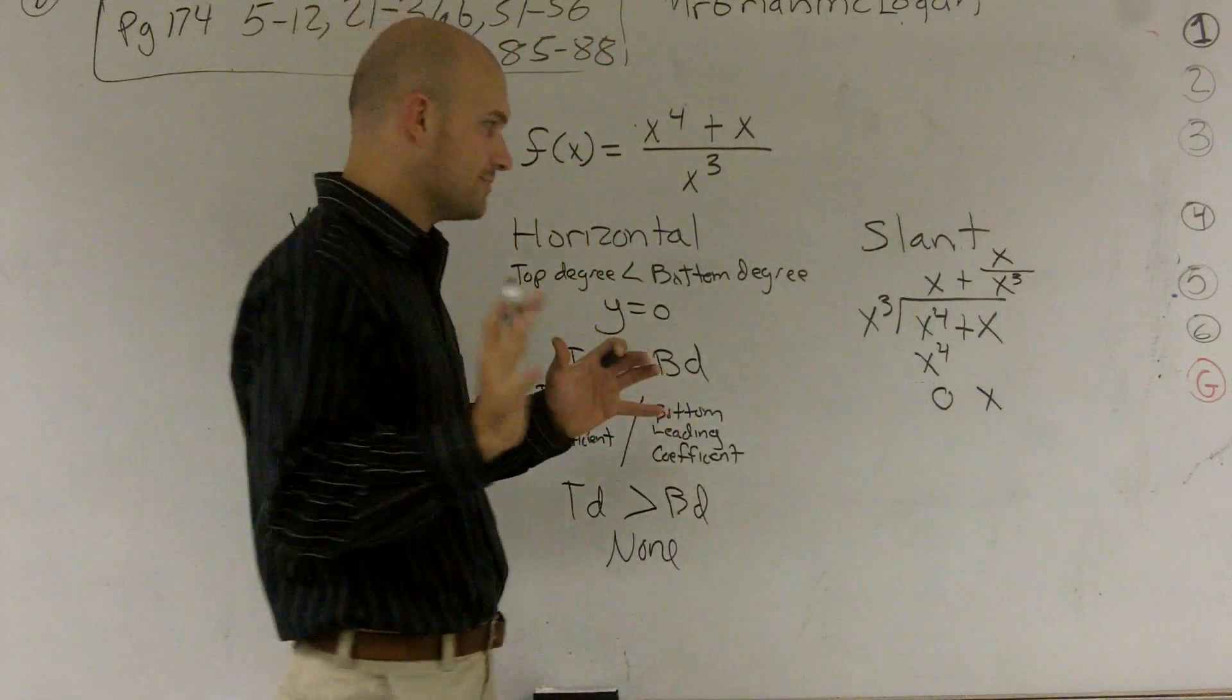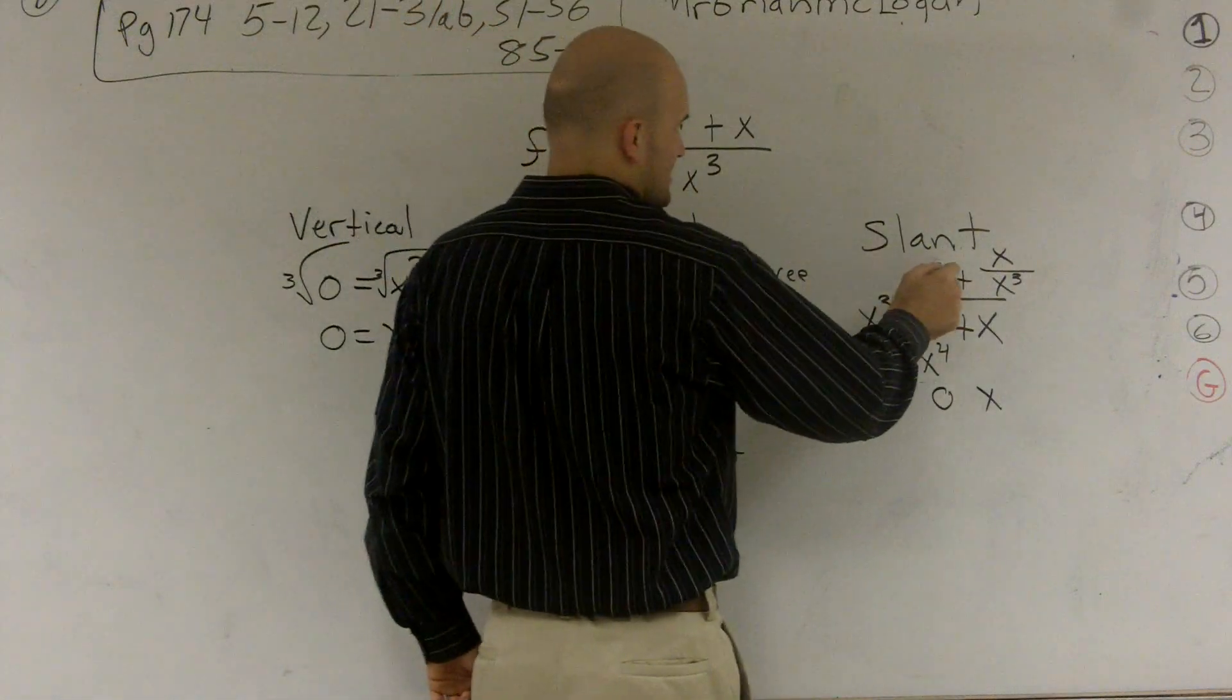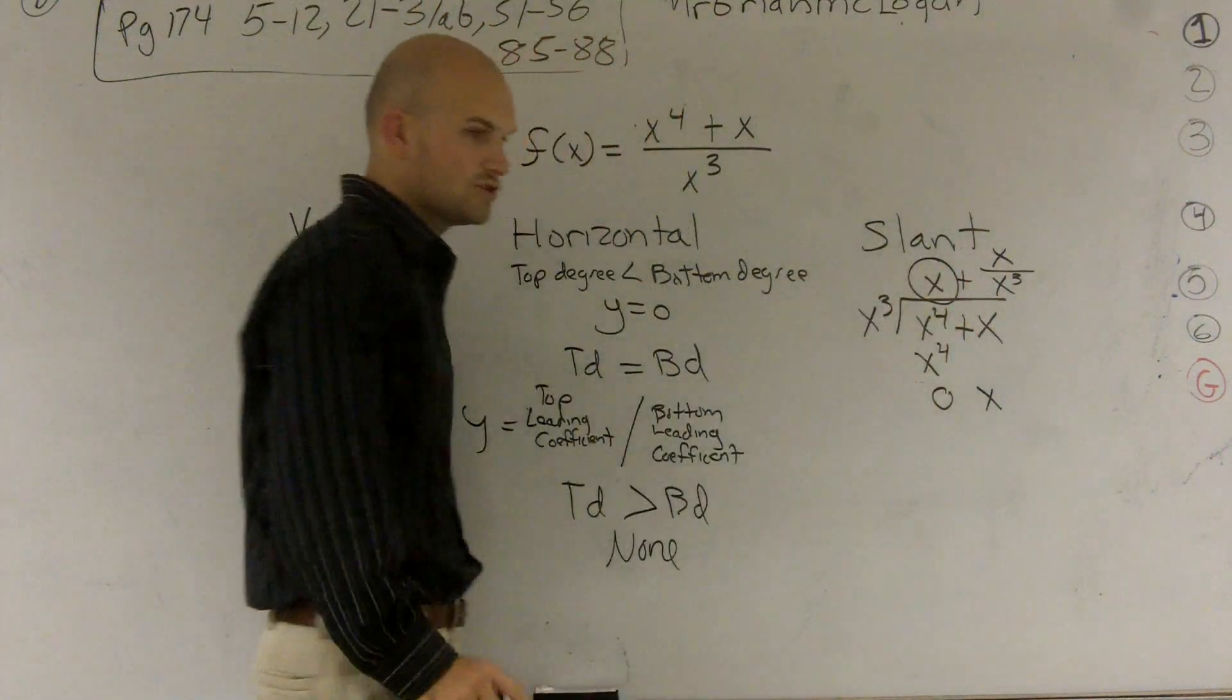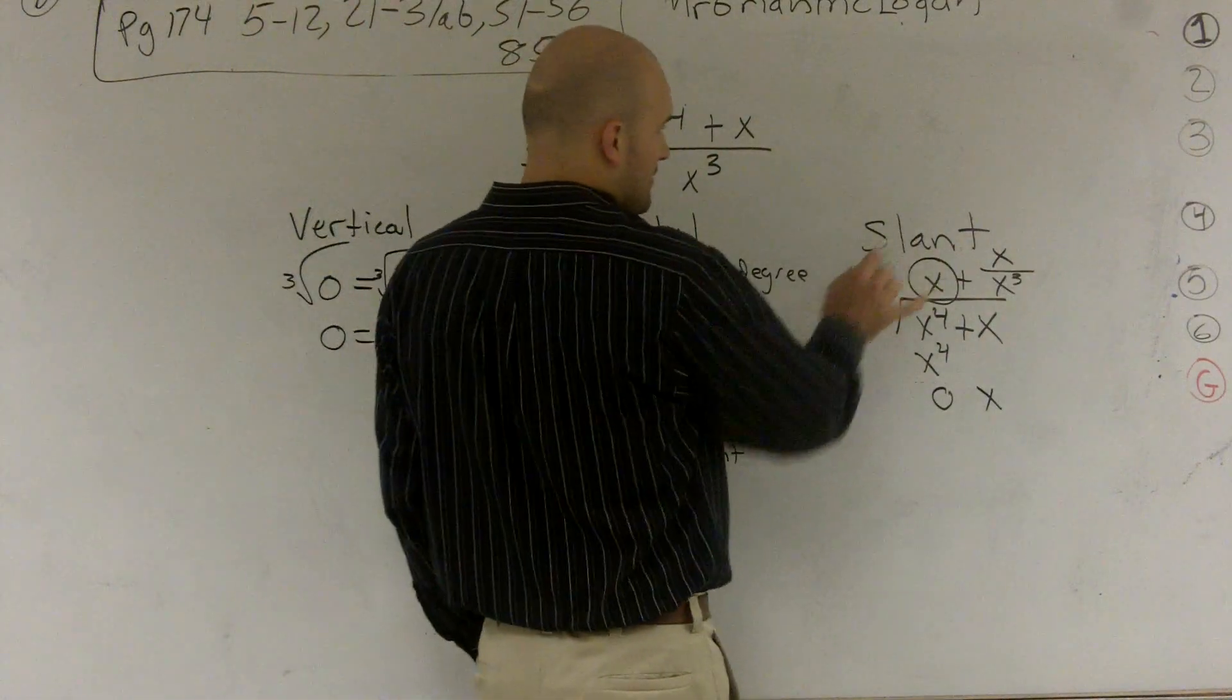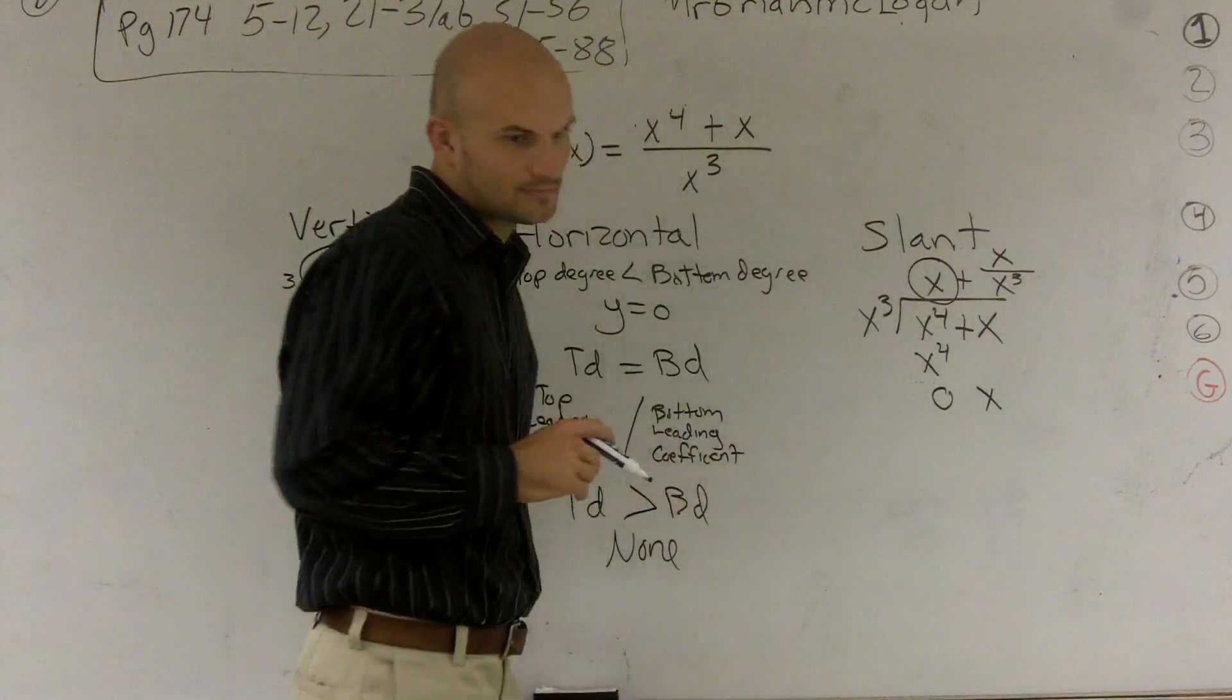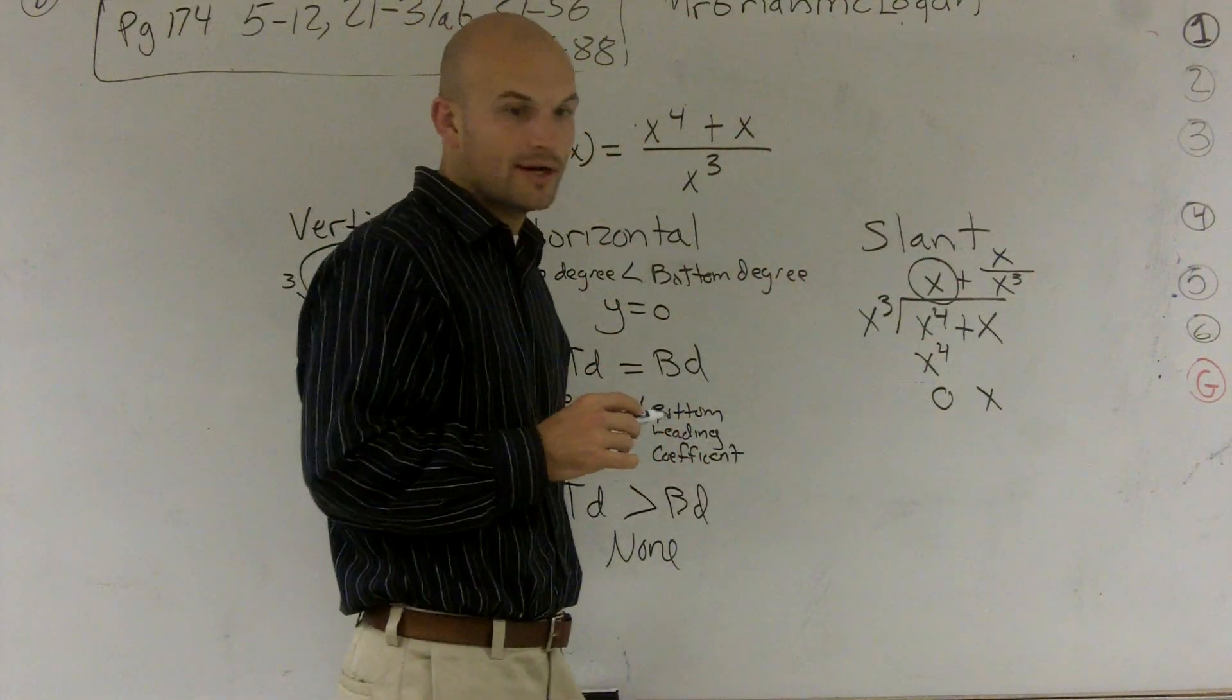On a slant asymptote, all right, if you can remember a slant asymptote, you're just going to take the quotient without the remainder as your asymptote. So therefore, my slant asymptote is going to equal x, all right?